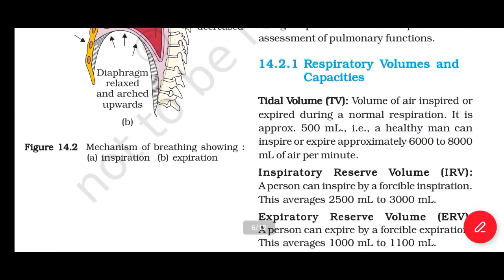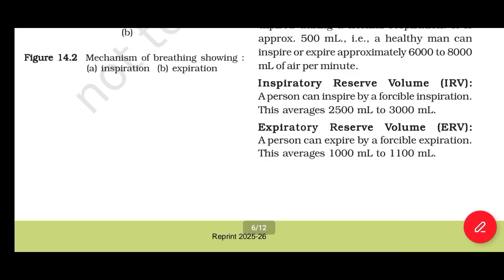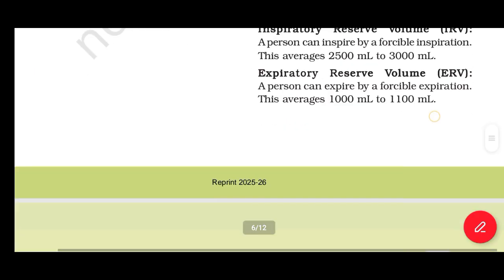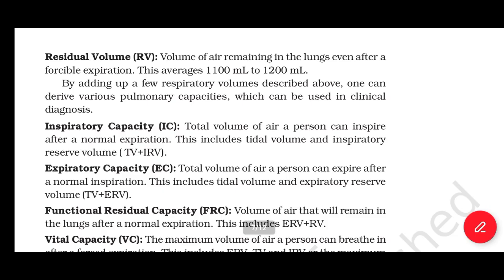Section 14.2.1: Respiratory Volumes and Capacities. Tidal Volume (TV): the volume of air inspired or expired during a normal respiration is approximately 500 ml; a healthy man can inspire or expire approximately 6000 to 8000 ml of air per minute. Inspiratory Reserve Volume (IRV): the additional volume a person can inspire by a forceful inspiration — average 1500 to 3000 ml. Expiratory Reserve Volume (ERV): the additional volume a person can expire by a forceful expiration — average 1000 to 1100 ml. Residual Volume (RV): the volume of air remaining in the lungs even after a forceful expiration — average 1100 to 1200 ml.